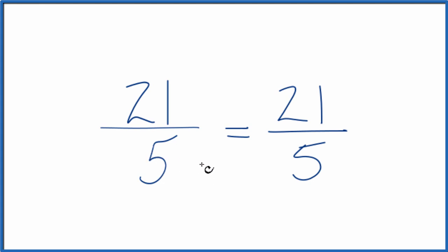We could change it to a mixed number since it's an improper fraction. The numerator is larger than the denominator. Let's give that a try. So 5 goes into 21 four times. 4 times 5 is 20 with 1 left over. Bring the denominator across.